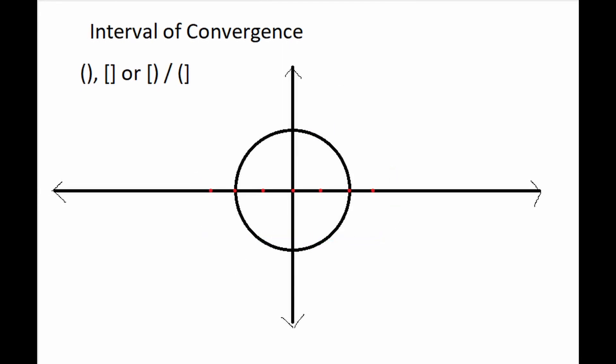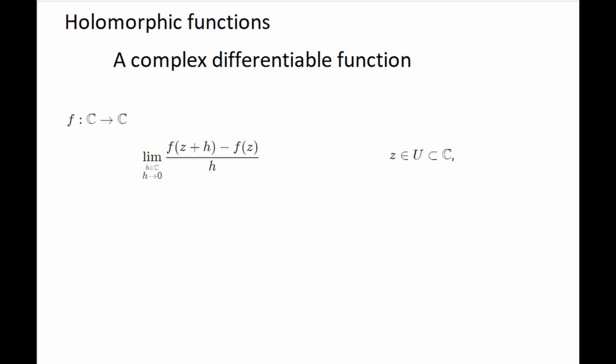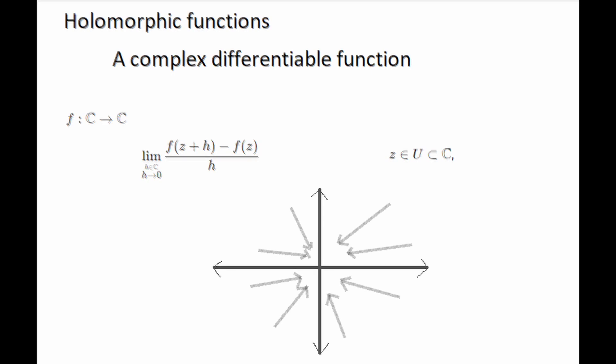A complex differentiable function is called a holomorphic function. Say a function is given from C to C. For all z belonging to C, the function is said to be complex differentiable if the following limit exists. The function is complex differentiable at every z belonging to u, and f is holomorphic on u, where u is a subset of C. The limit for the differentiability condition is very similar to the differentiability condition for the real axis, but how is it different? Due to the increased dimensionality as a result of the addition of the complex axis, when h approaches zero, it must do so from all possible directions.